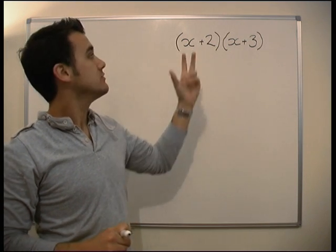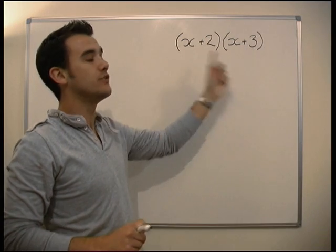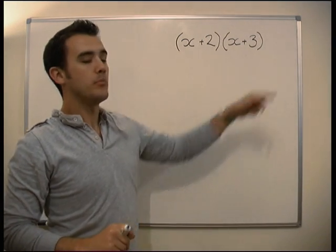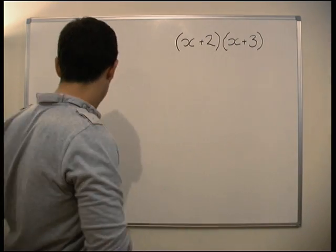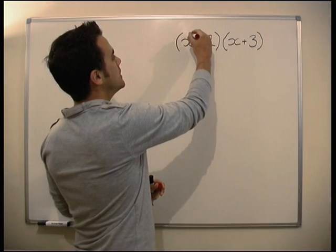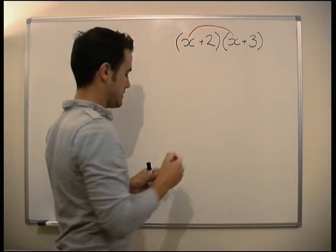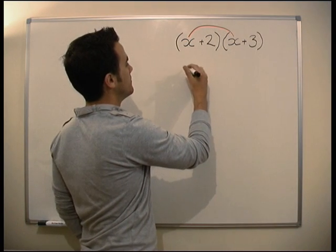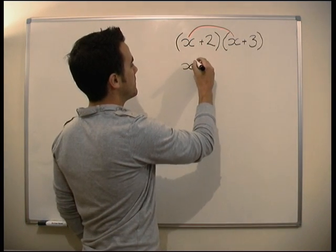If I had values, I'd need to do whatever it says in here and then times the results together. But it's just times every term in here by every term in here. It's actually very straightforward. So what we do, the first thing we do, we times x by x, which gives us x².